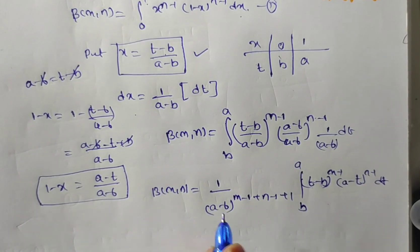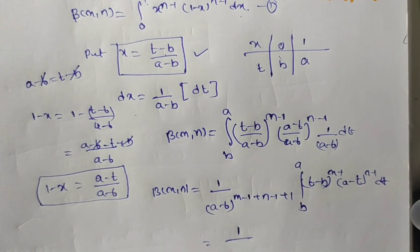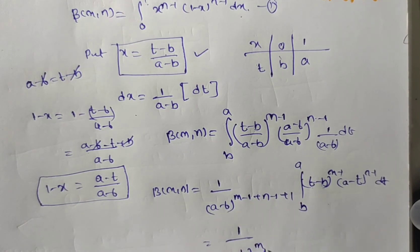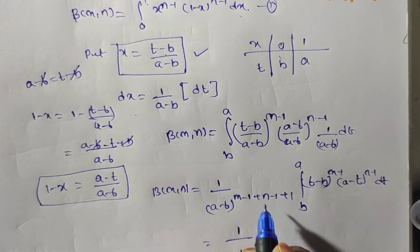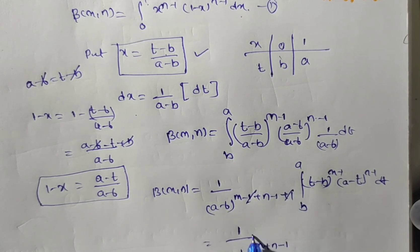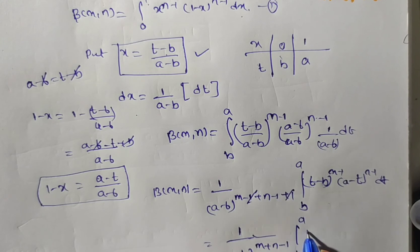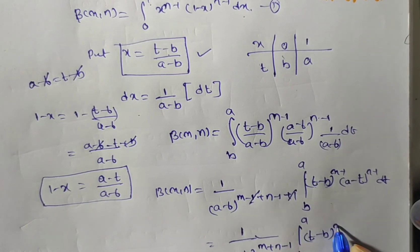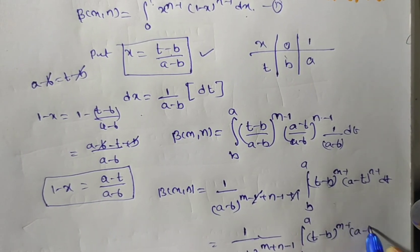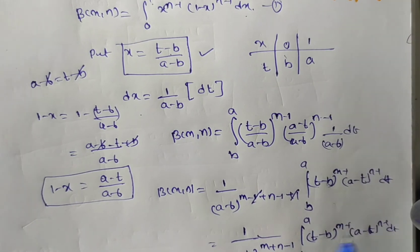Simplifying the exponent: (m minus 1) plus (n minus 1) plus 1 equals m plus n minus 1. So beta of m comma n equals 1 by (a minus b) to the power m plus n minus 1, times integral from b to a of (t minus b) to the power m minus 1 times (a minus t) to the power n minus 1 dt.